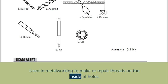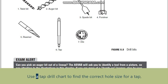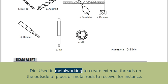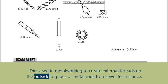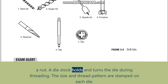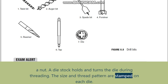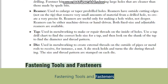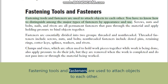Reamers can be either machine-driven or hand-driven; both fixed-size and adjustable reamers are available. Tap: used in metalworking to make or repair threads on the inside of holes. Use a tap drill chart to find the correct hole size for a tap, then look on the shank of the tap to find the diameter and thread pattern. Die: used in metalworking to create external threads on the outside of pipes or metal rods to receive, for instance, a nut. A die stock holds and turns the die during threading; the size and thread pattern are stamped on each die.